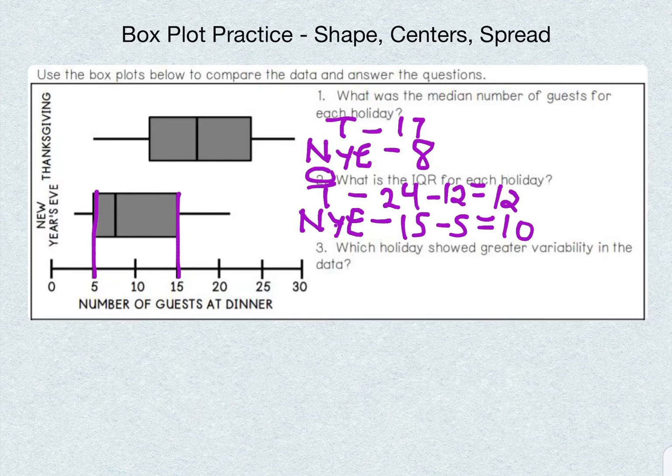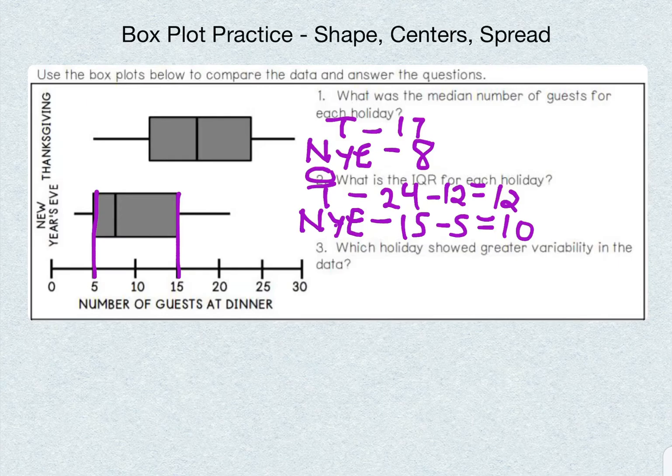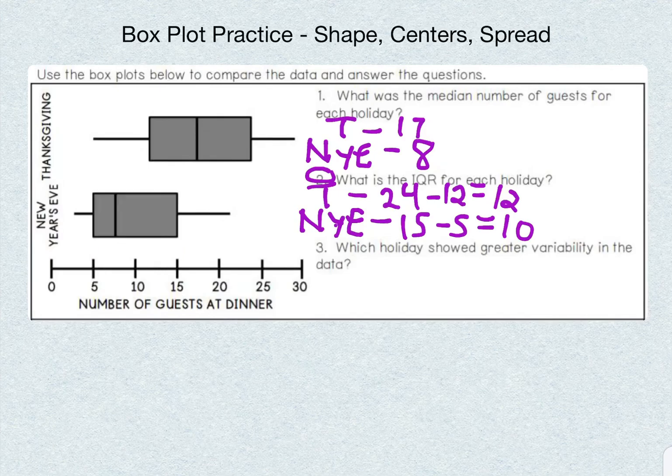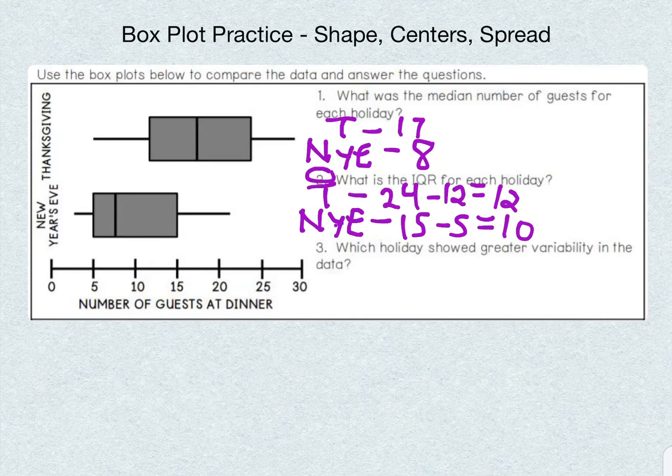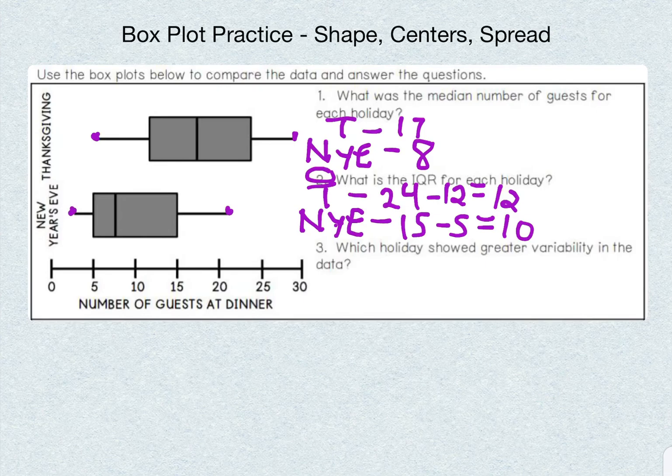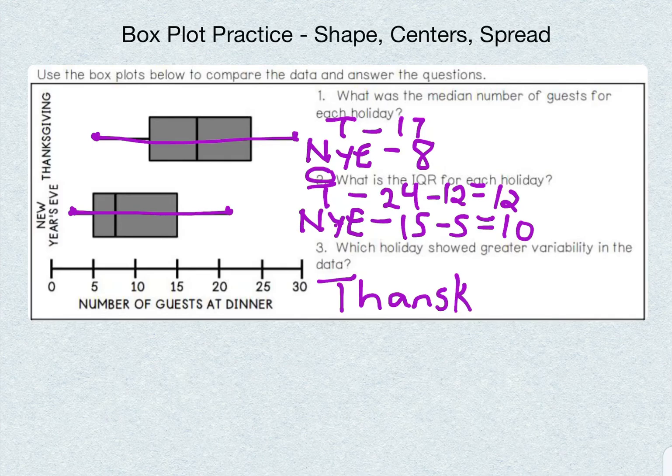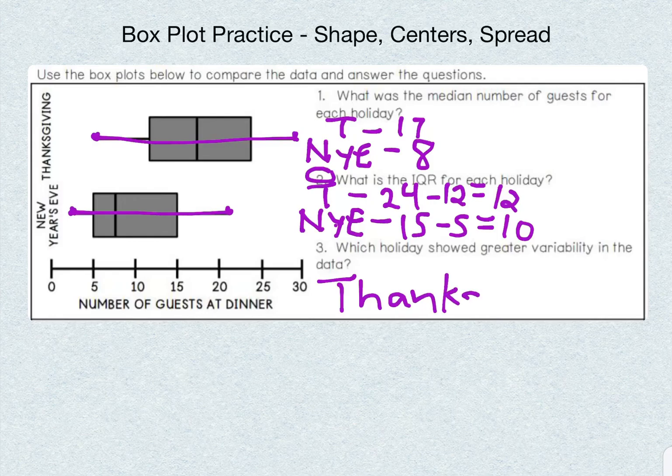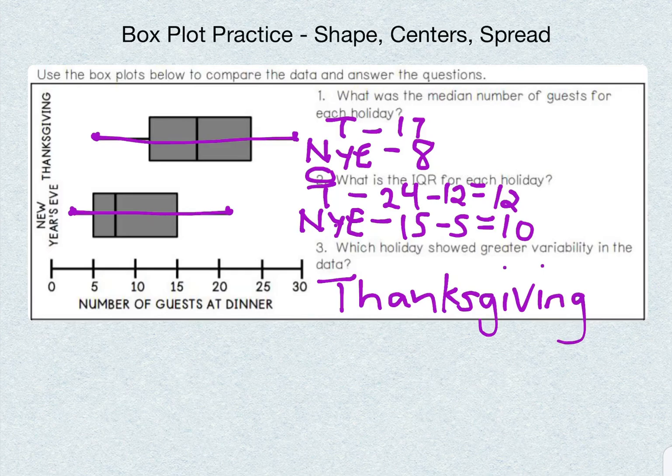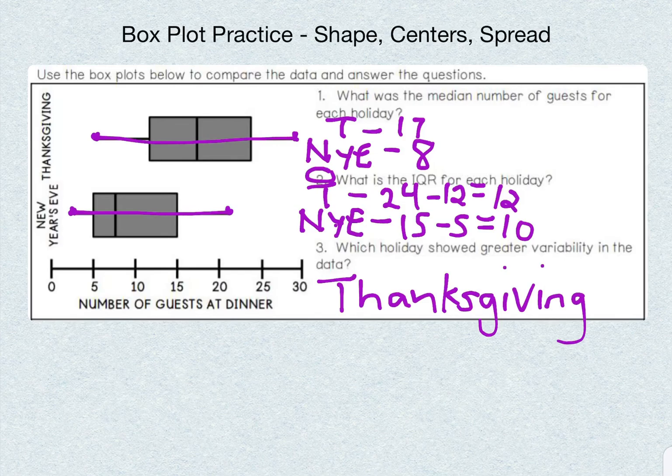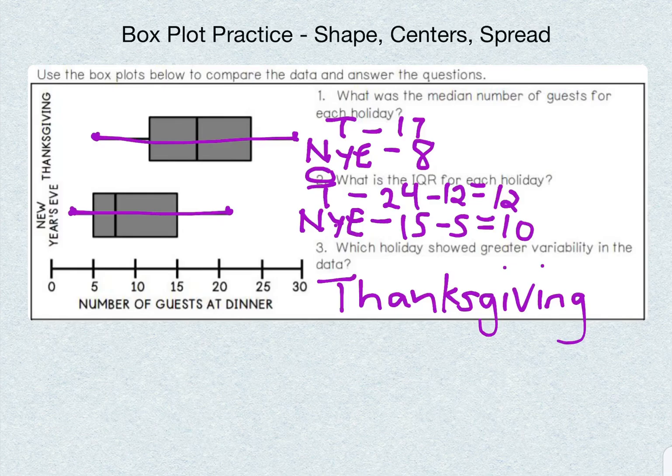So for our last question, which holiday showed greater variability in the data? Variability meaning greater spread in the data. The holiday that showed the greatest variability or spread is going to be the set of data that has the larger range of data that spreads more. And when we look at how long each box plot is, we can see that Thanksgiving has more variability, has more spread, has different points, more variety of points. So Thanksgiving has more variability. Now, this is an example of when you're comparing two box plots. So that's what you're going to be moving into next. And you can refer back to both of these videos when you're having to compare your box plots or your two dot plots.